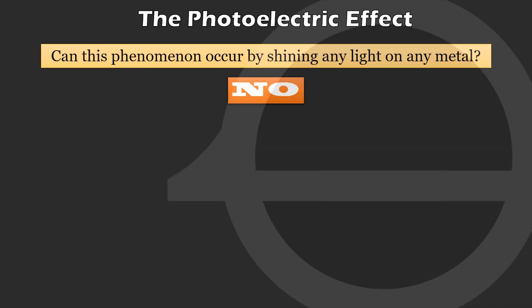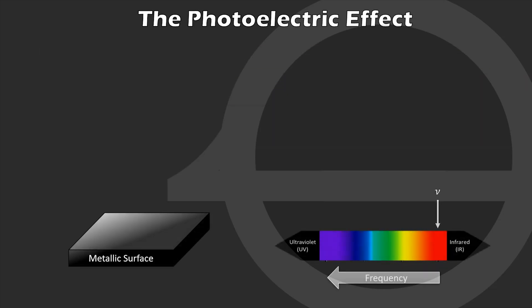But nothing answers questions better than experiments, so let's do some experiments. We start by shining light of low frequency, say around red, on a metallic surface as shown. We try to detect, by some means, any electrons ejecting out of the surface.